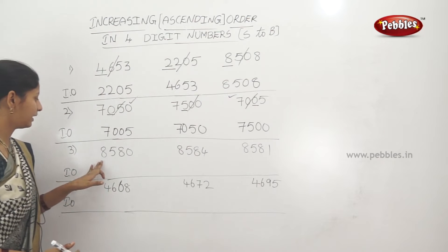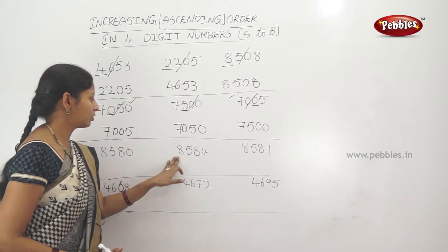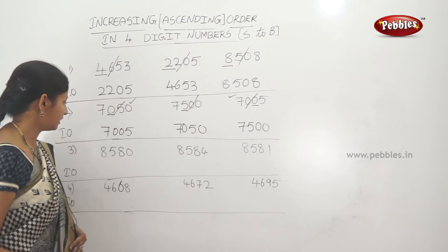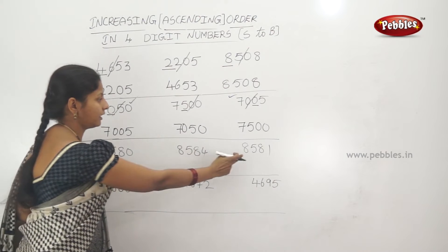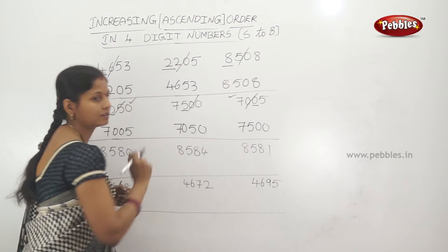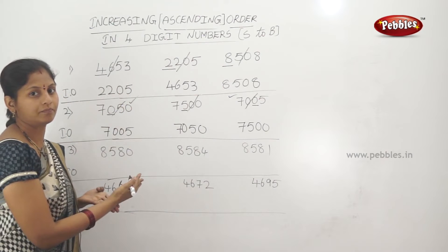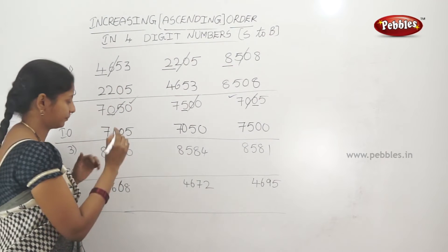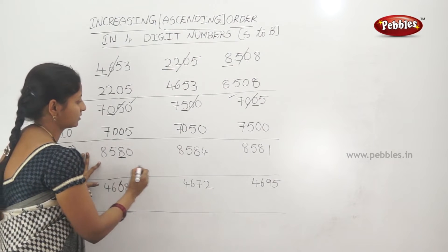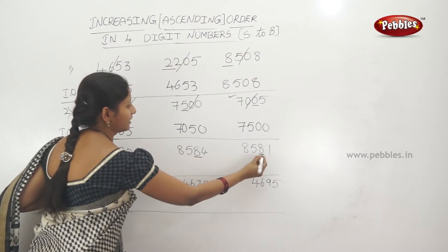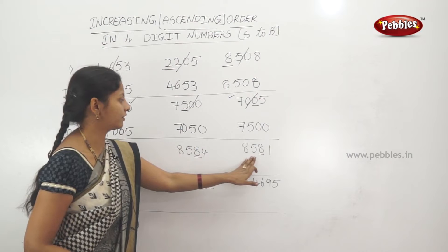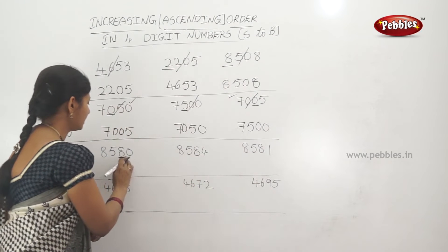One more example: 8,580 — 8,584 — 8,581. The first digit is 8 for all three — same. The second digit is 5 for all three — also same. The third digit is 8 for all three — also same.